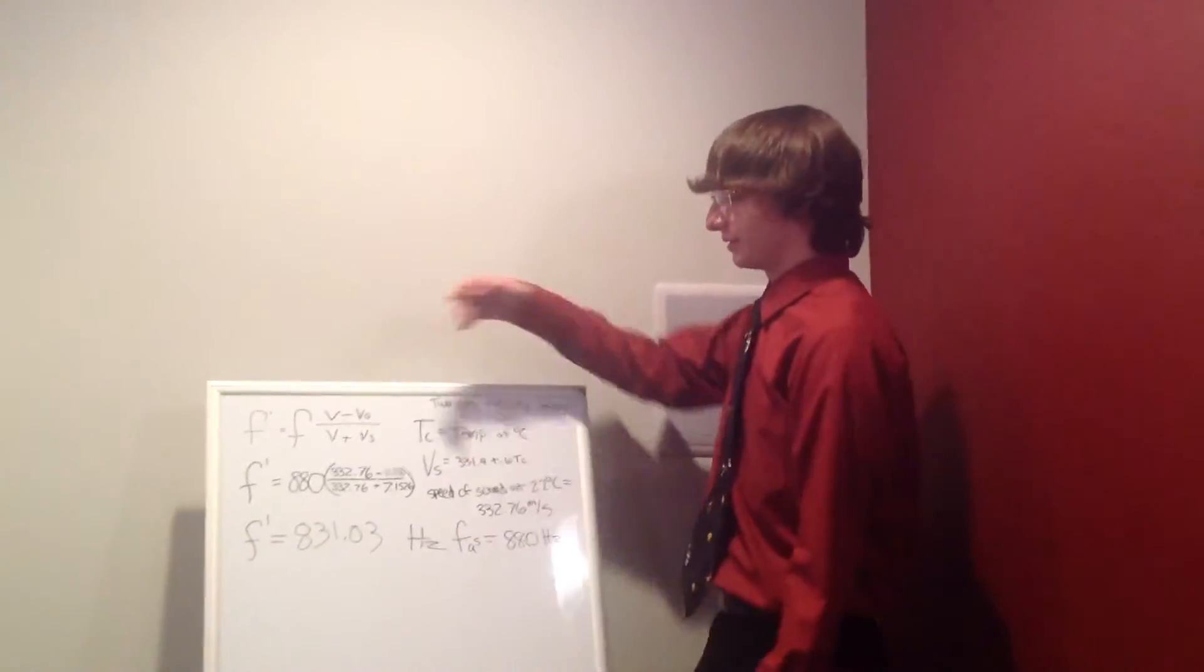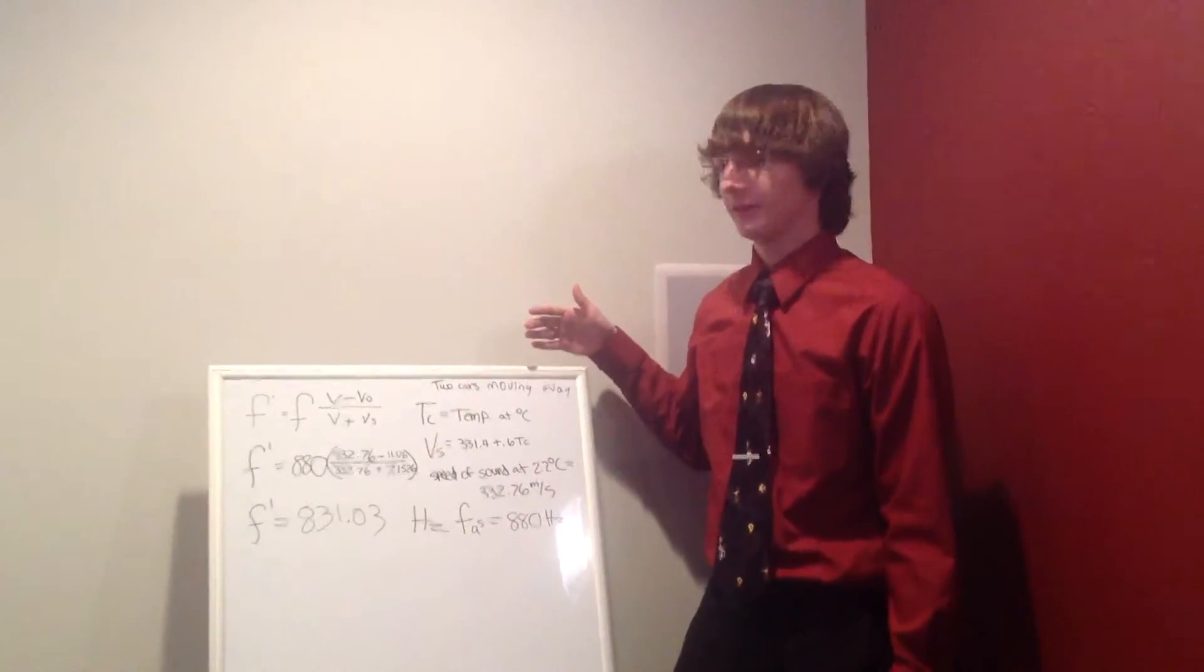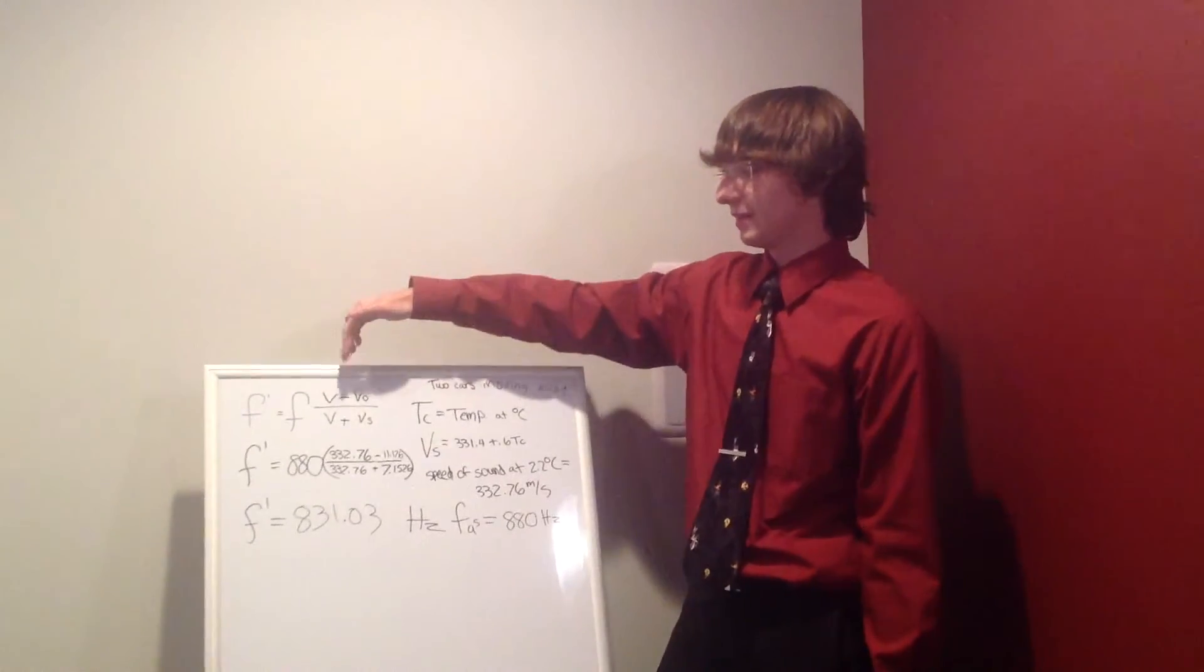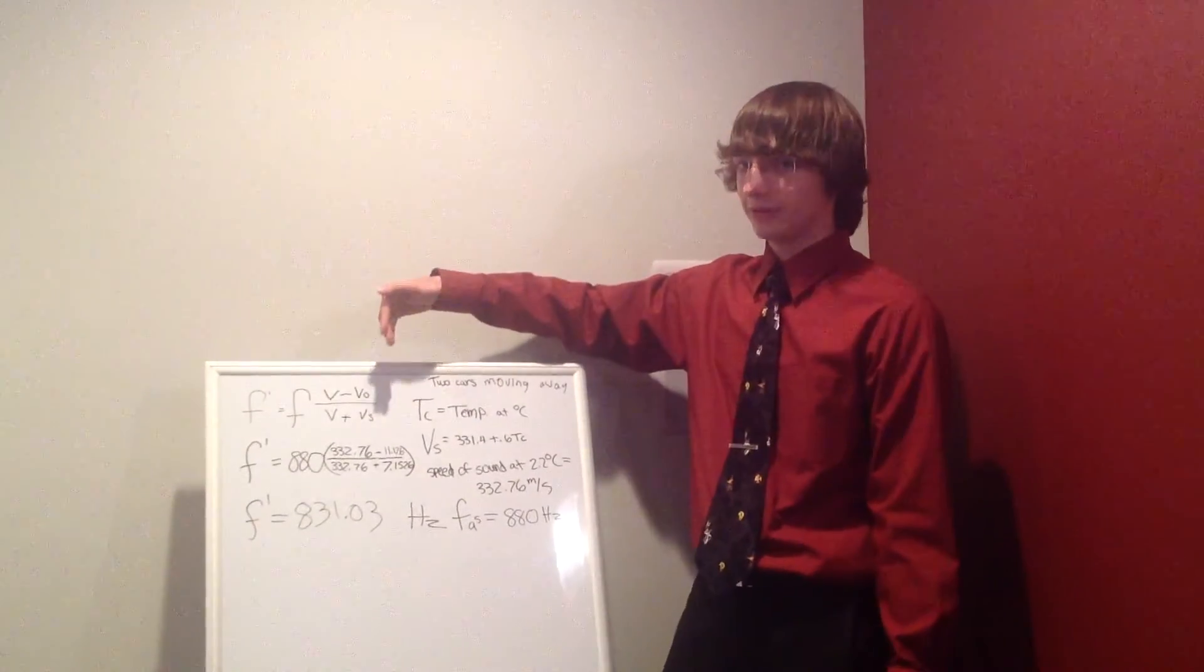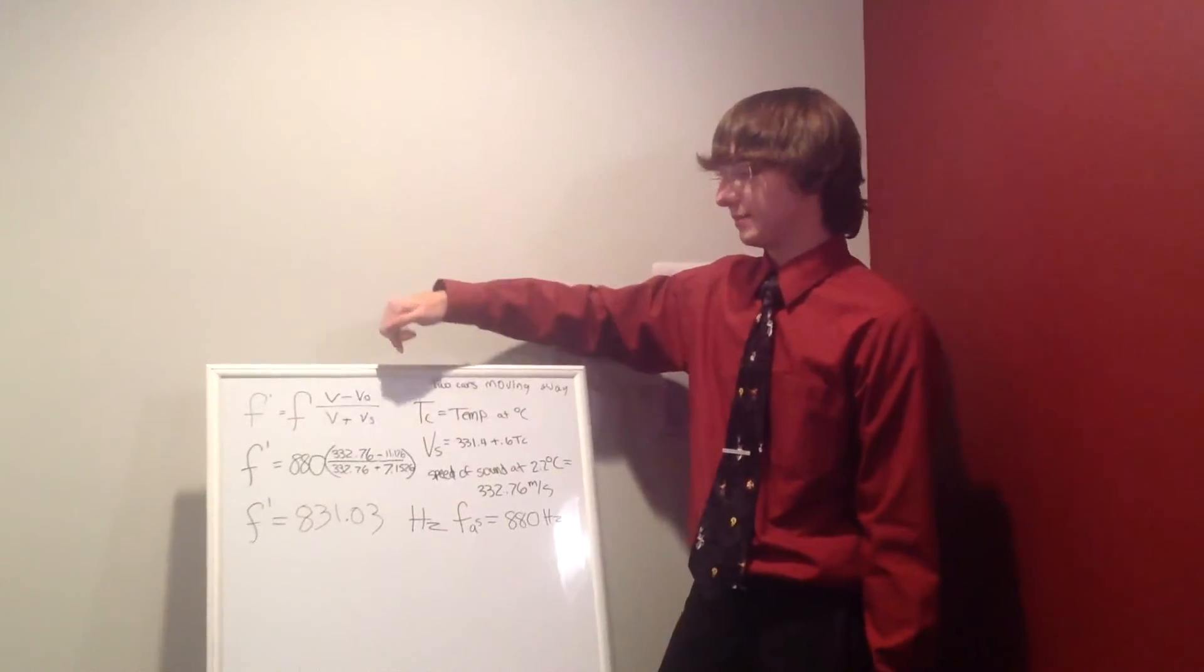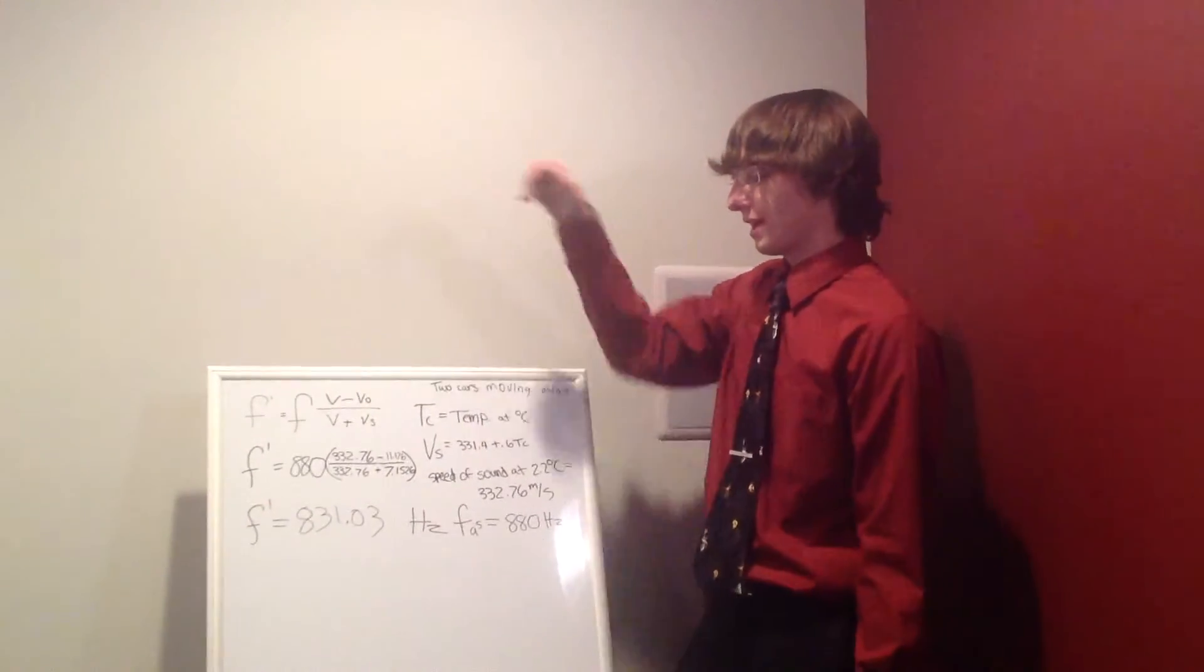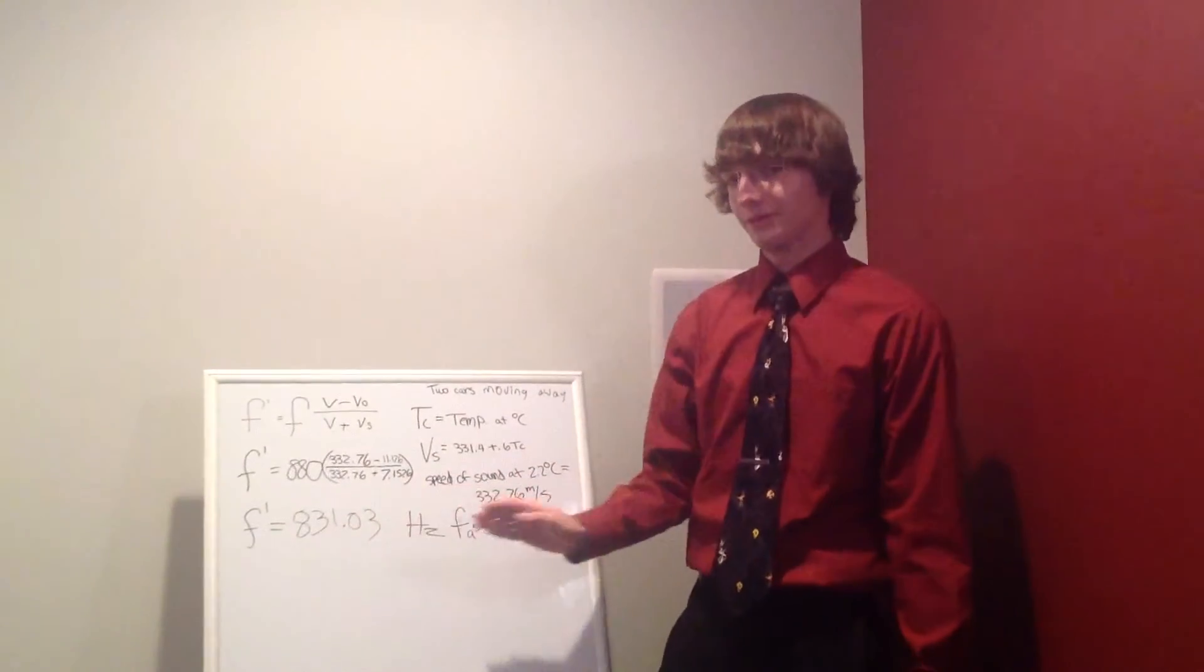Now we have the equation for the cars as they move away from each other, where we are taking away the speed of the car going 25 miles per hour and adding the speed of the car going 15 miles per hour to get 831.03 Hertz.